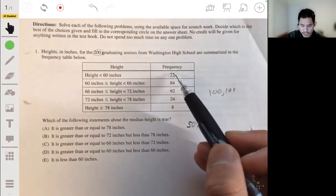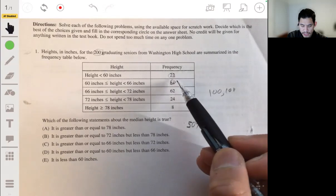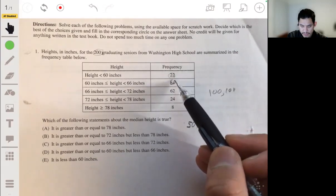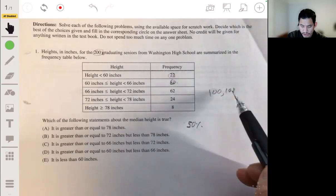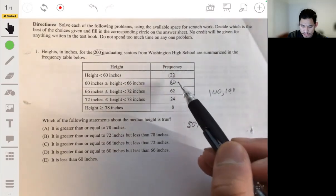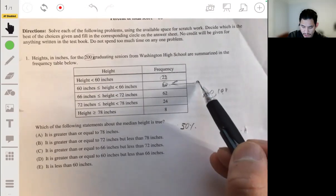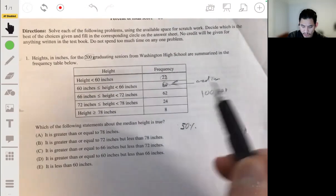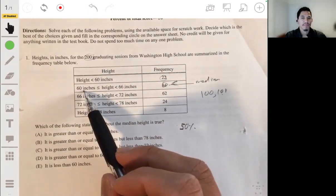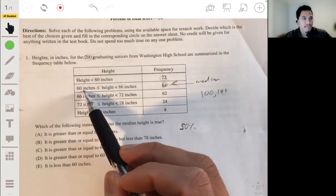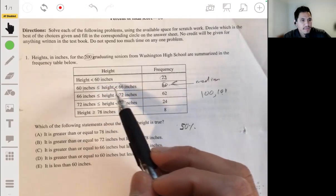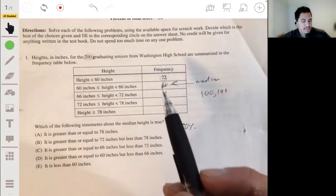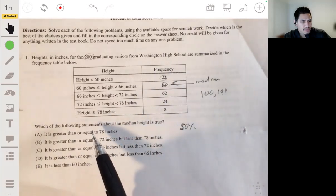So there's 22 in here and there's 84 in here, that means that's going to be a total of 106. So that means the 100th or the 101st person is going to be in this group right here. The median is going to be in here. We don't know exactly where, but we just can say that the median height is basically between 60 and, is it six, between 60 inches but less than 66 inches.